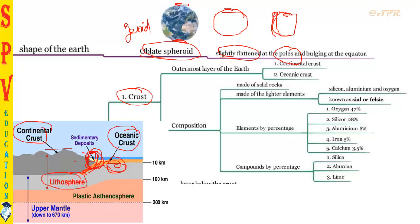Below that lies the lithosphere layer, and below the lithosphere you can find the plastic asthenosphere. Between the lithosphere and upper mantle there is a layer of lava. You may think that volcano eruptions come from the core or center of the Earth — no, that's not the case. The layer called the asthenosphere mostly pumps out volcanoes.